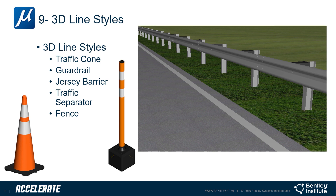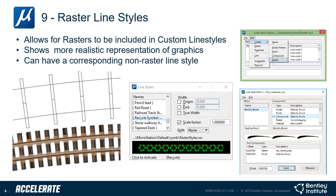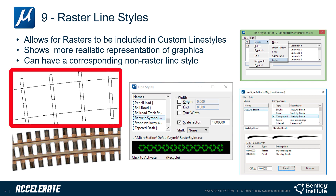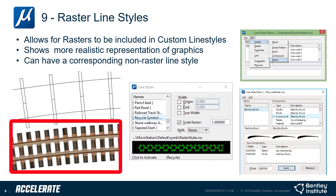MicroStation line styles not only allow for the use of 2D geometry and 3D geometry, but raster as well. The upper line style is a standard railroad custom line style, defined by two continuous strokes — the tracks — and a rectangle as the track tie.